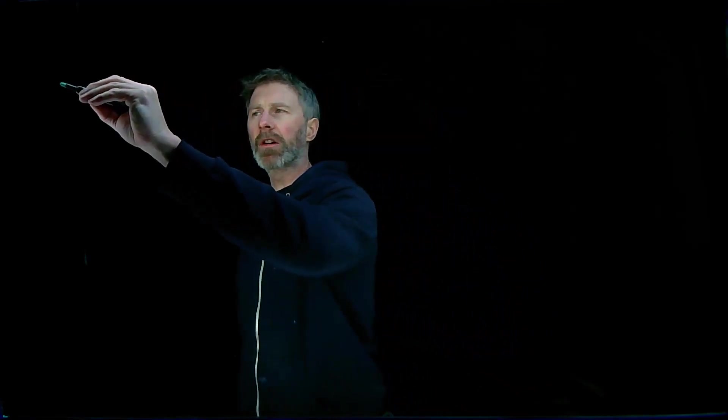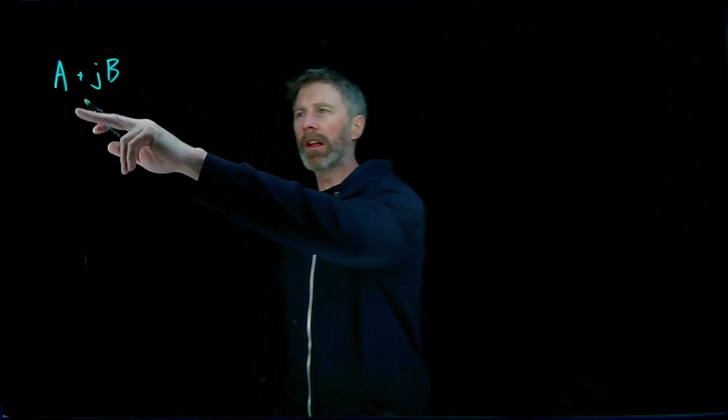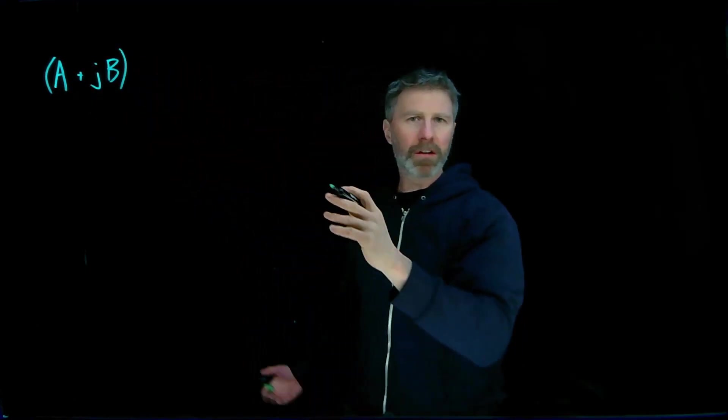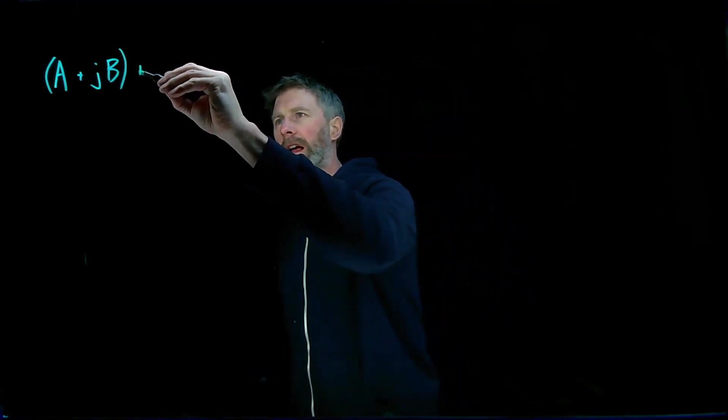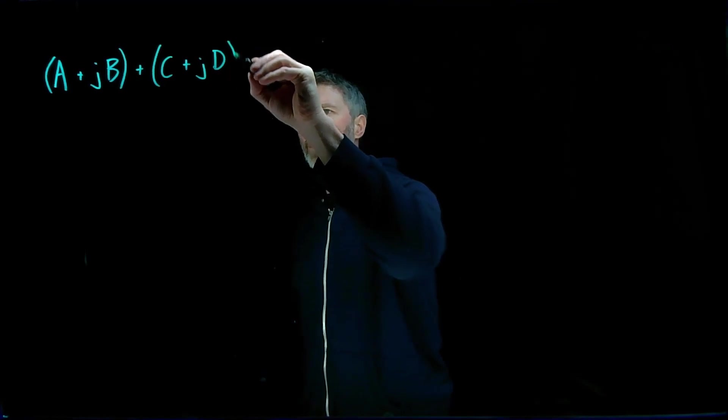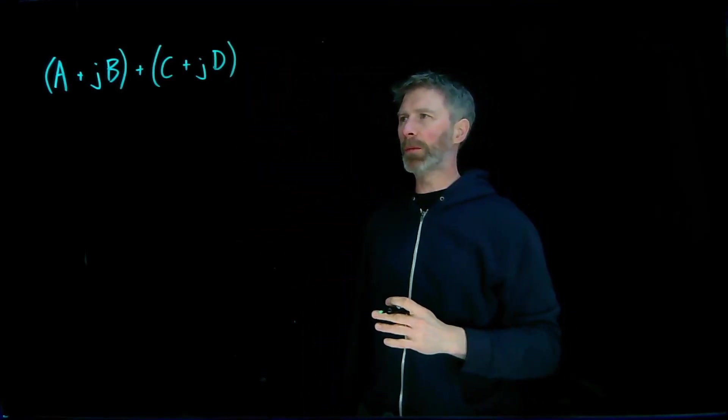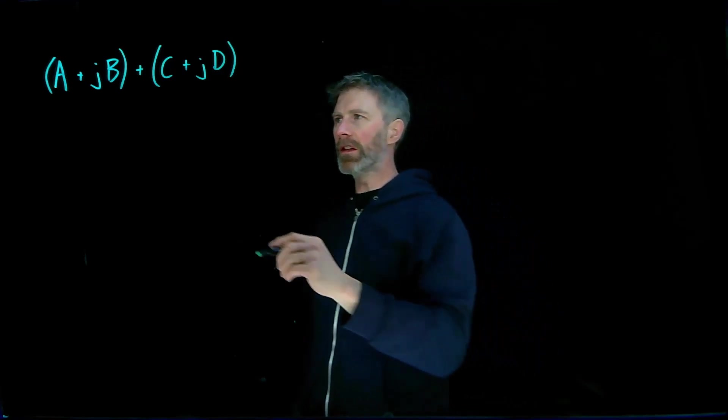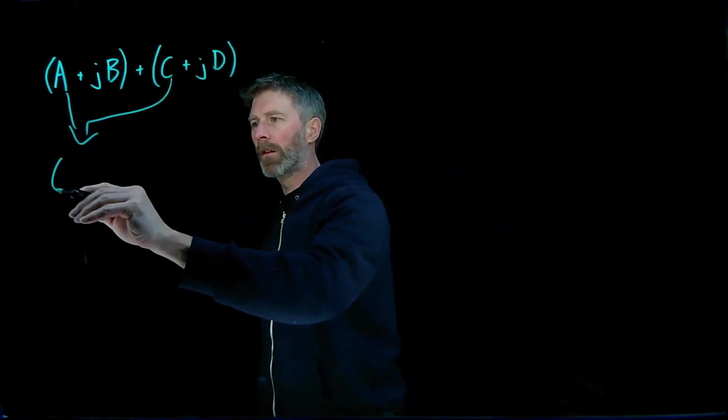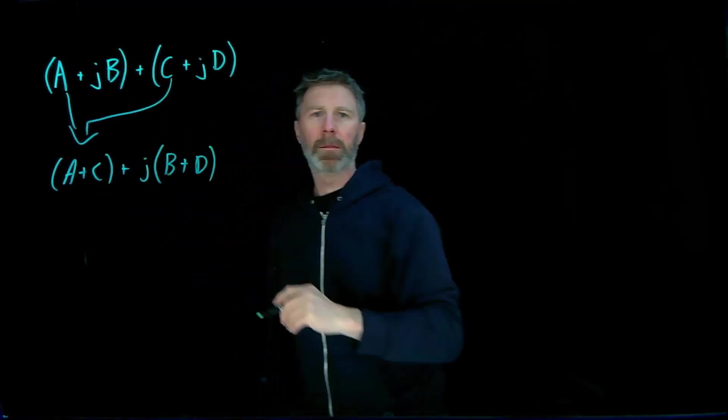And we'll start with addition and subtraction. Addition and subtraction are most easily done when your numbers are in rectangular form like this. So if I have a number a plus jb, where a and b are just real numbers, and I want to add it to c plus jd. When the complex numbers are in rectangular form like this, it's really easy to do the addition. I just have to take the real parts, add them together, and the imaginary parts, and add those together, and I'm done.